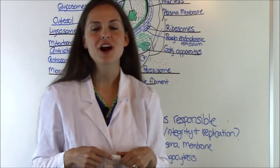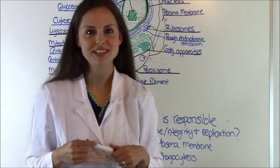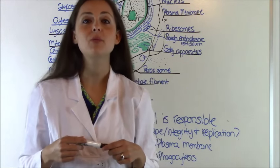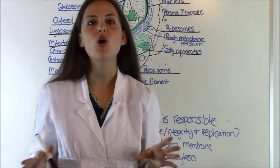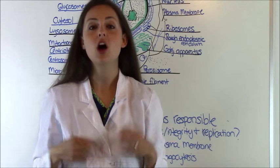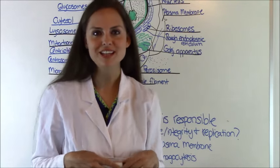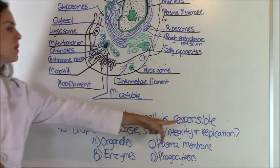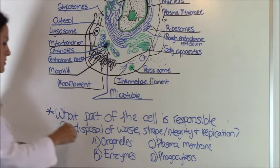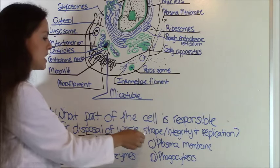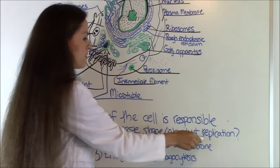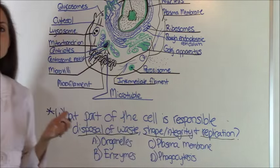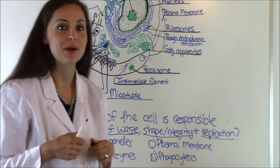Okay, let's go over a quiz question. Remember, after these quiz questions, you can go to my website, RegisteredNurseRN.com, and take the whole quiz for free to test your knowledge on the cell structure and function. So let's go over this question. It says, What part of the cell is responsible for disposal of waste, key phrase, shape and integrity, and replication? Now this is multiple choice, and you have the following answers to choose from.